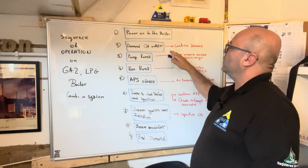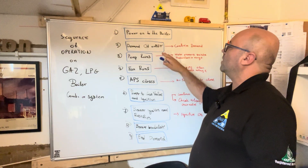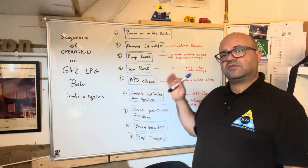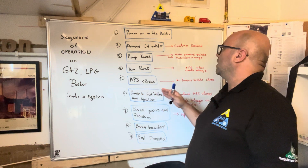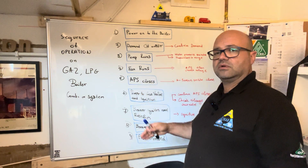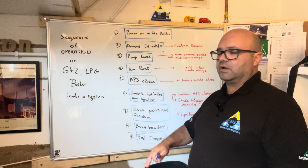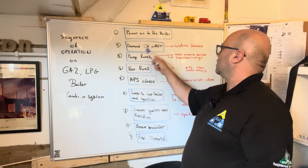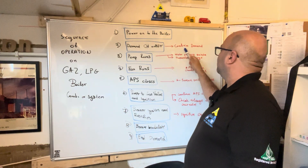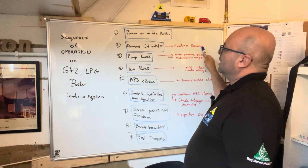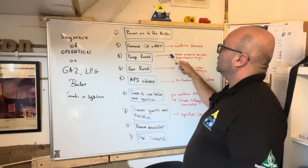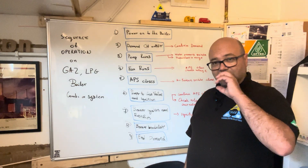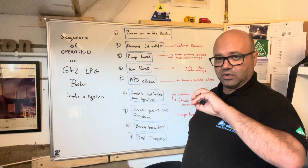Once we confirm we have power and the boiler is in standby, we need to ask for demand. We can turn the thermostat on, turn the domestic hot water on, or if it's a combi boiler, open a hot tap and see what happens. As long as we've confirmed we have a demand, we move to the next step.